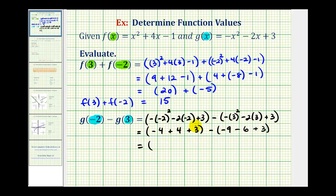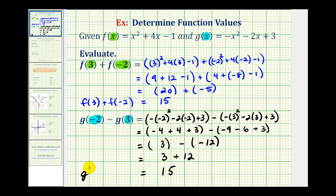Negative four plus four is zero, zero plus three is three. Here we have negative nine minus six, that's negative fifteen, plus three, that's negative twelve. So subtracting a negative is the same as adding a positive, so this becomes three plus twelve, which is equal to positive fifteen.